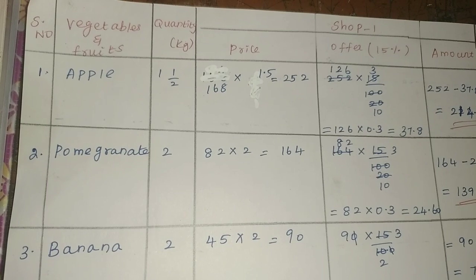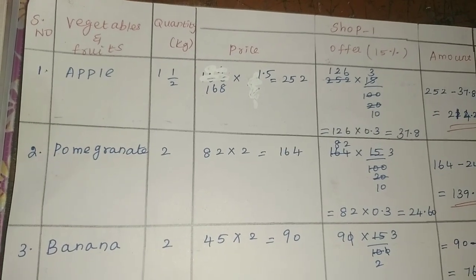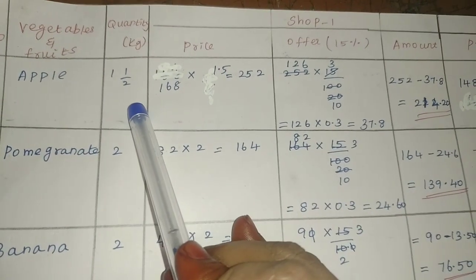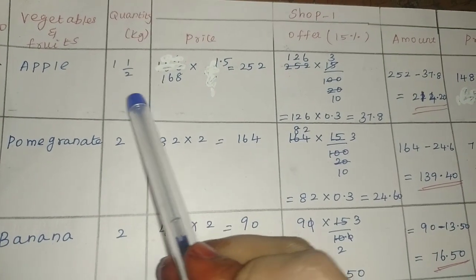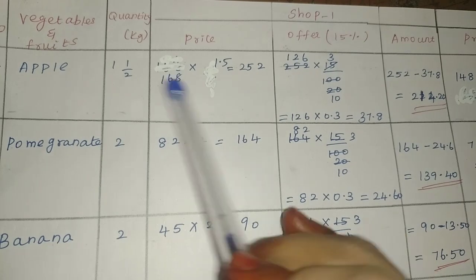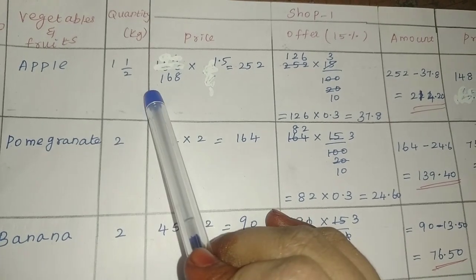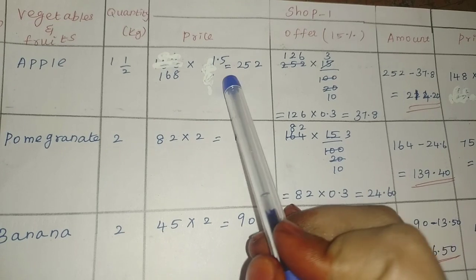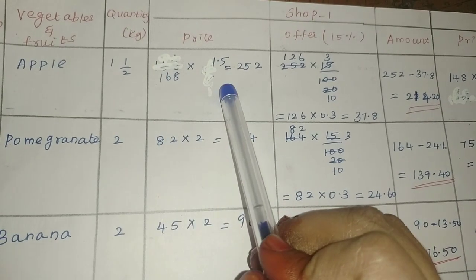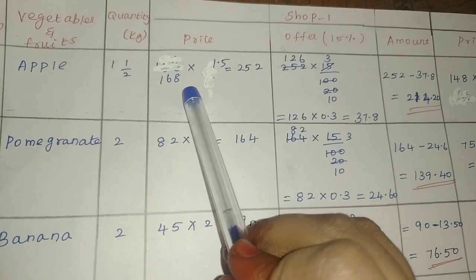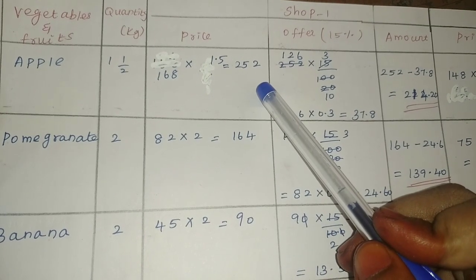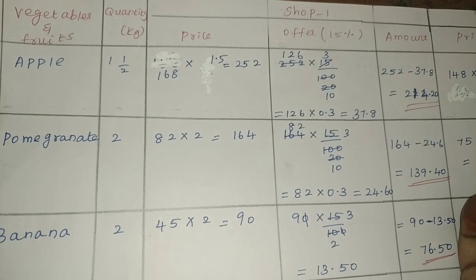First item: fruits and vegetables — apple. From the picture, the quantity is 1.5 kg. The price per kg is ₹168. So 168 into 1.5 is ₹252.